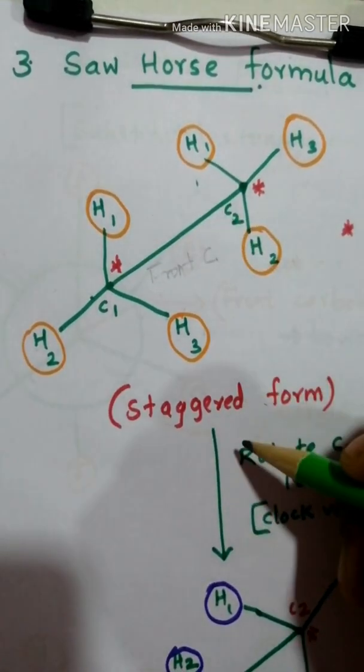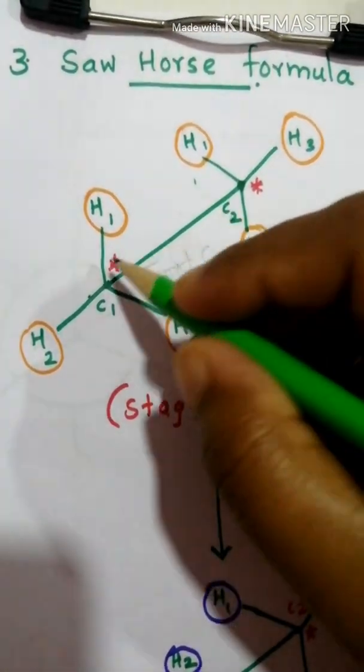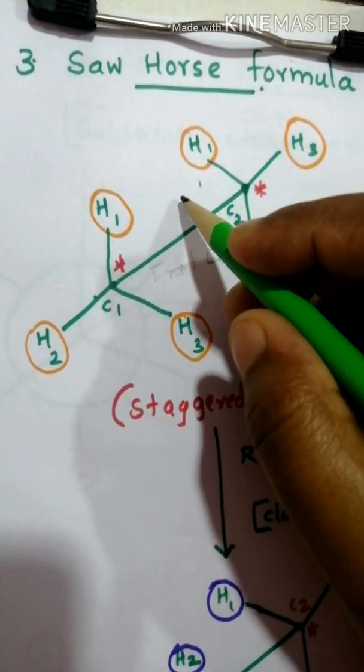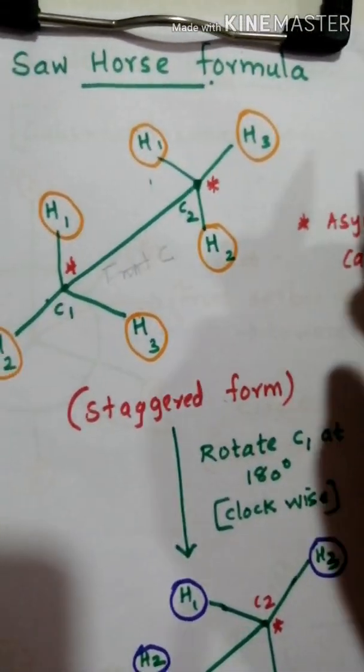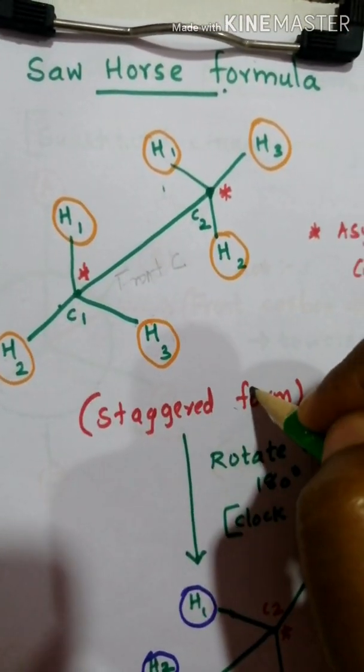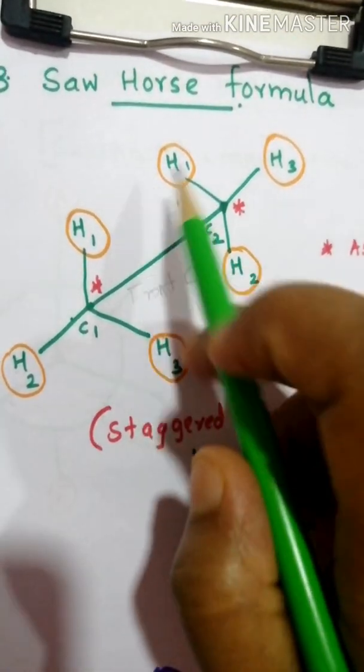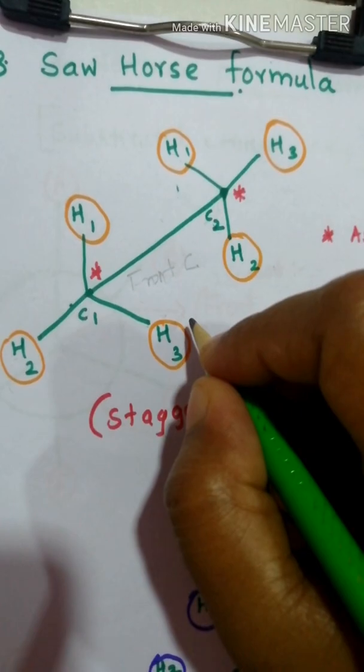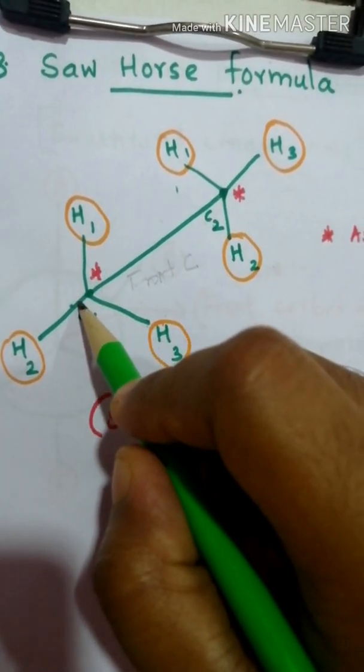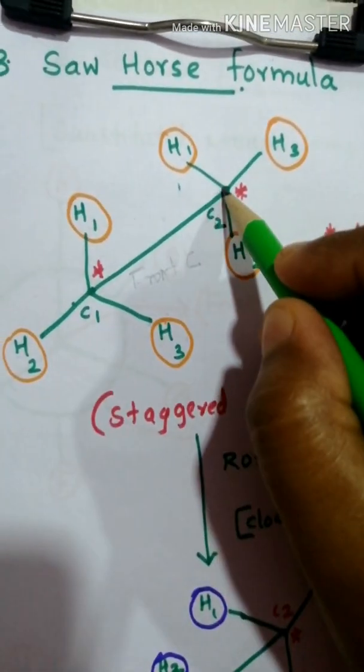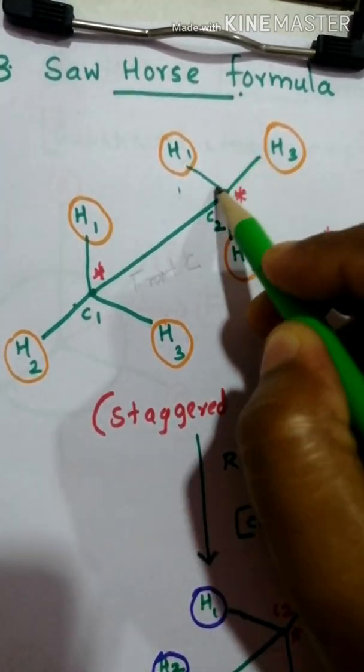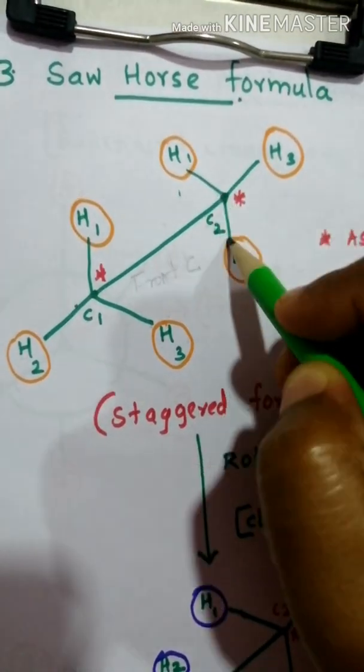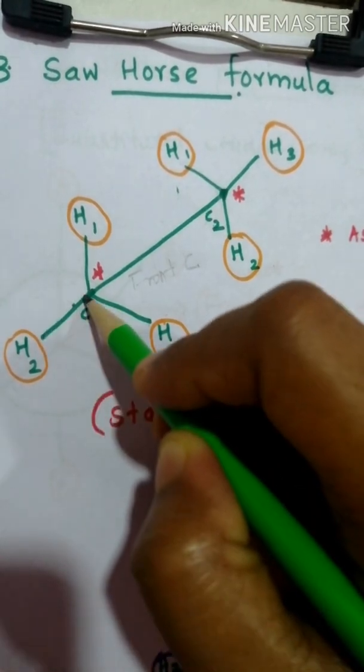These two groups are placed at maximum distance. How can we easily identify staggered form of Sawhorse? It can easily be identified by looking at the shape of this bond - the back carbon bond looks like a Y form, just like a Y shape.